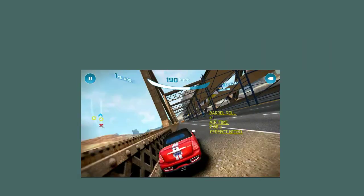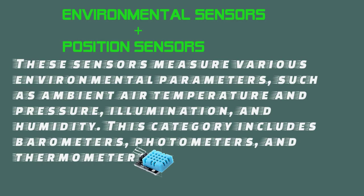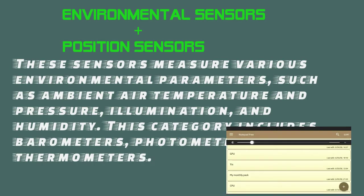The next category of sensors is Environmental Sensors. These sensors measure various environmental parameters such as ambient air temperature and pressure, illumination, and humidity. This category includes barometers, photometers, and thermometers.